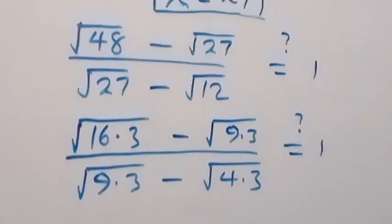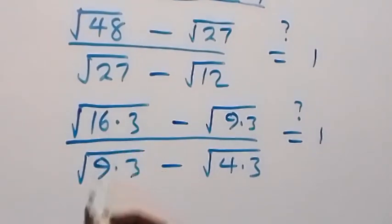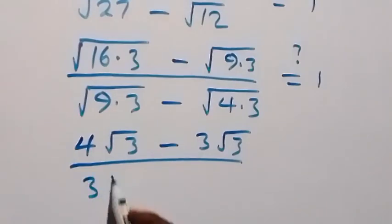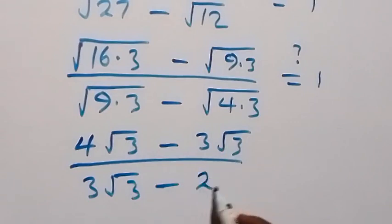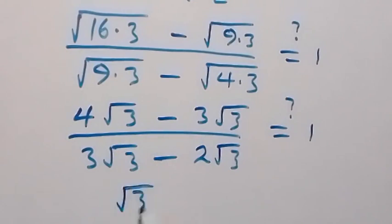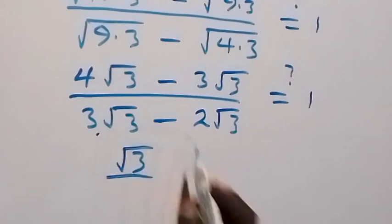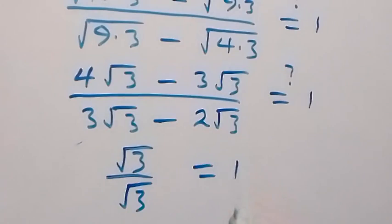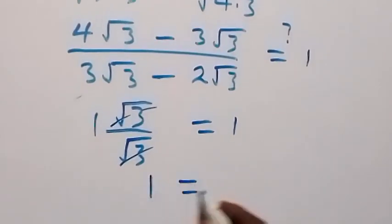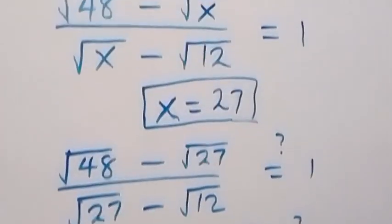Separating the roots: root 16 is 4 so we have 4 root 3, and root 9 is 3 so we have 3 root 3. The denominator has 3 root 3 minus root 4 times 3, which is 2 root 3. So we get (4 root 3 minus 3 root 3) over (3 root 3 minus 2 root 3), which is root 3 over root 3, equals 1. Left hand side equals right hand side, so x equals 27 satisfies the given problem.